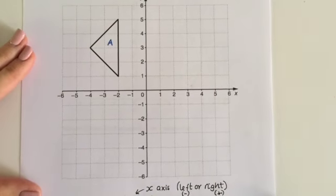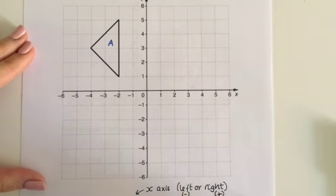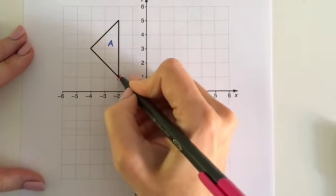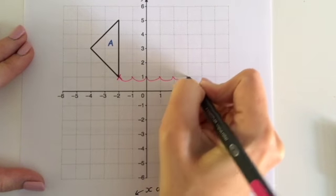So again, I've got a triangle, and I'm moving it five places to the right. So I'm going to pick a corner. I'm going to choose this one. So it moves one, two, three, four, five.